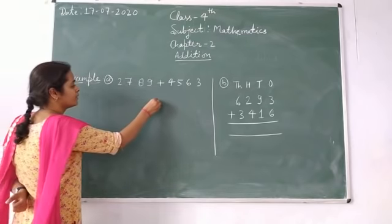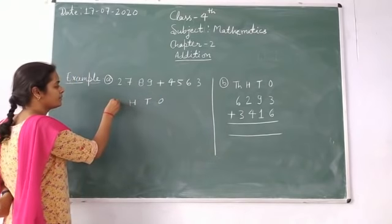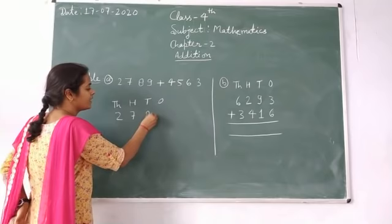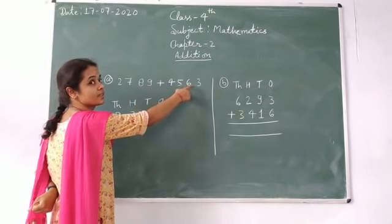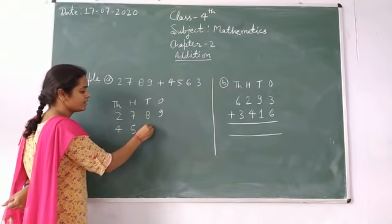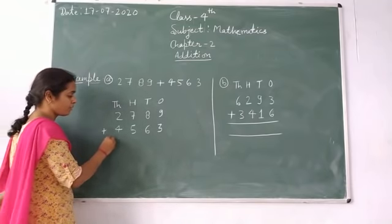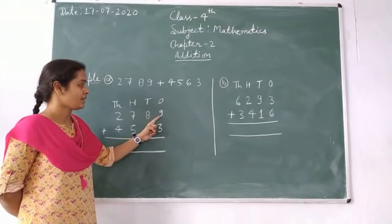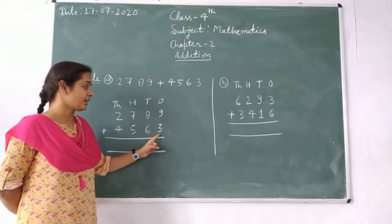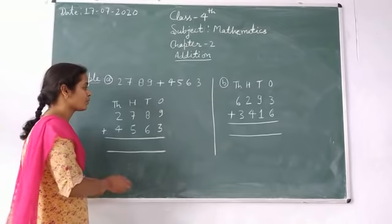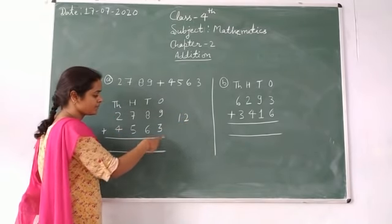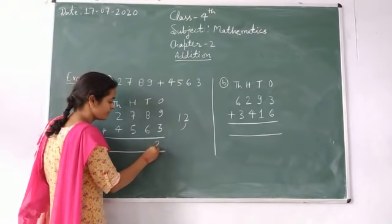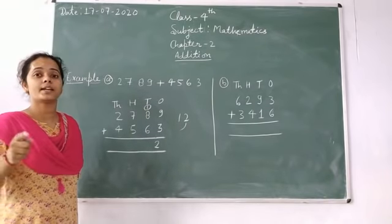We have ones, tens, hundreds, and thousands columns. Write two thousand seven hundred eighty-nine, and four thousand five hundred sixty-three. Start from the ones place. Nine plus three — count three numbers forward from nine. We get twelve. For twelve, write two at the ones place, and carry one to the tens column.